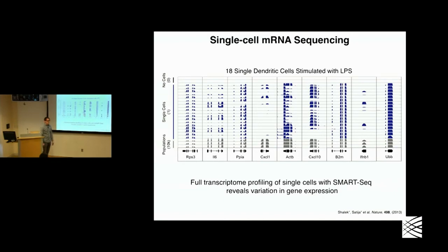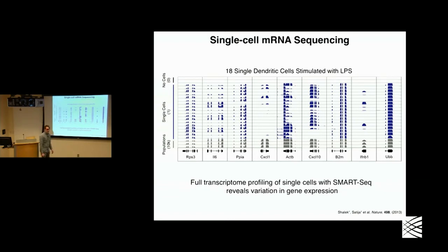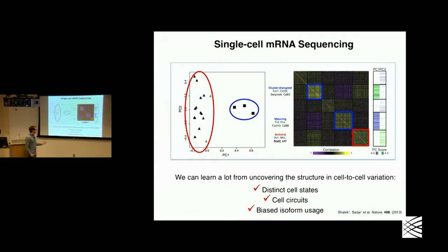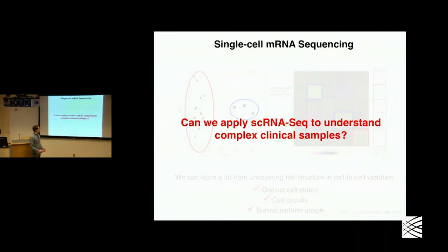I was really blown away that we could take only 18 LPS-stimulated dendritic cells and find this vast world of diversity within them. And not only diversity and variation, but that there was co-variation — so we could identify cell states, we could identify circuits, we could even find biased isoform usage. But the real question I was left with was whether we could apply this to clinical samples and generate actionable data.